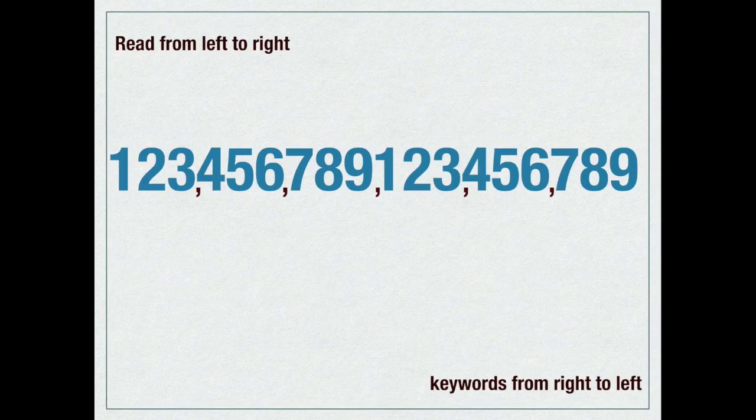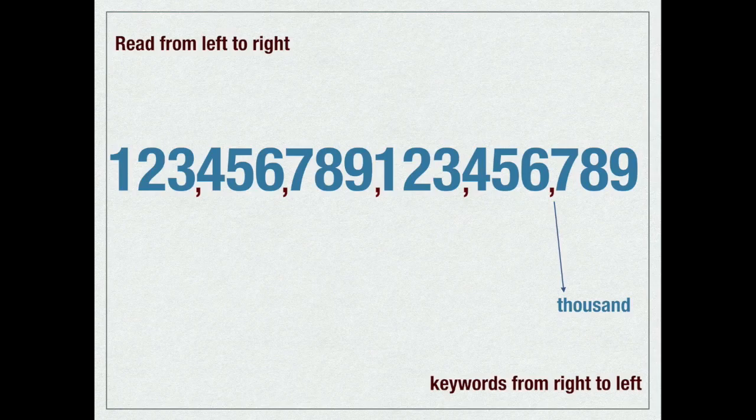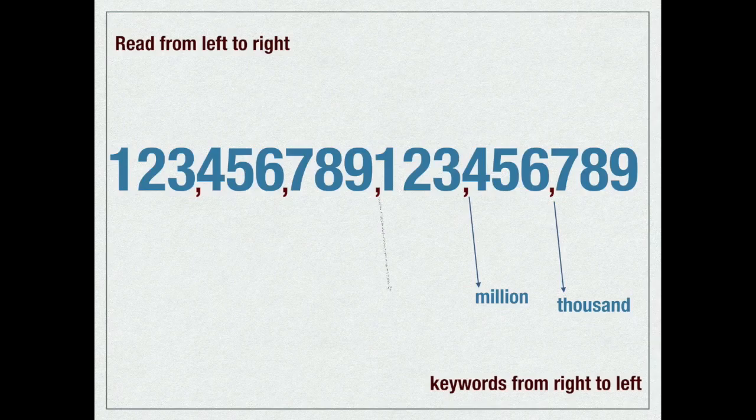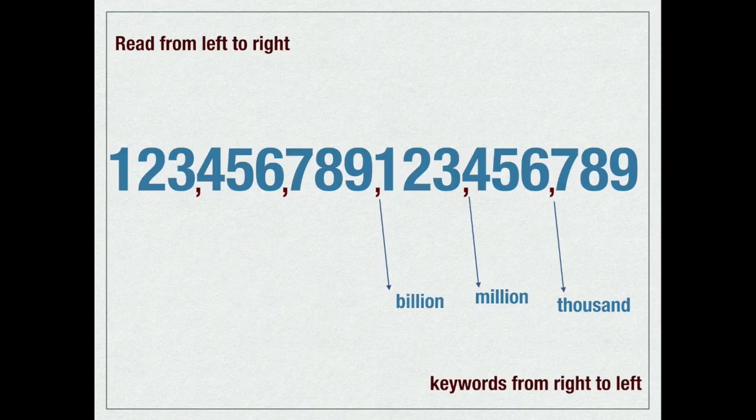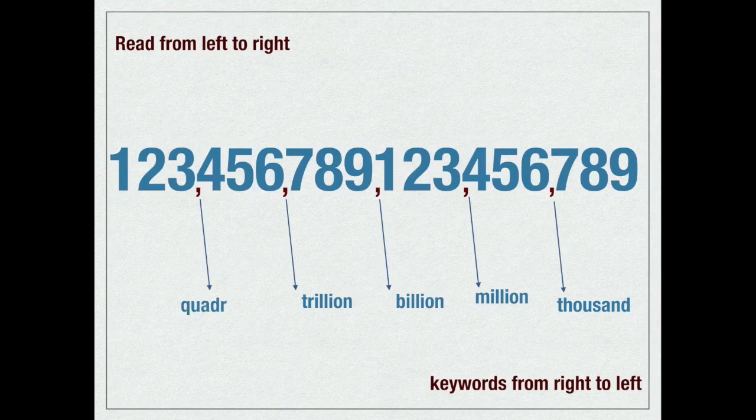Can you read this number now? I'm not sure. Let's name the groups. The first comma puts us at thousand. The second comma puts us at million. The third comma puts us at billion. The fourth comma puts us at trillion. And the fifth comma puts us at quadrillion.